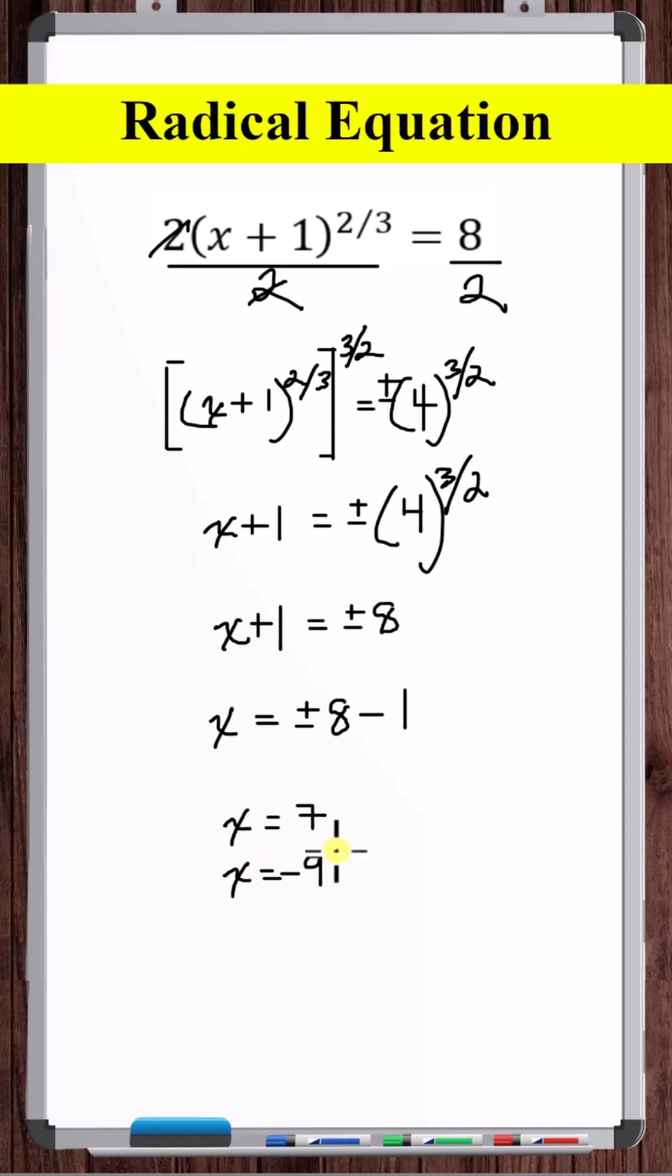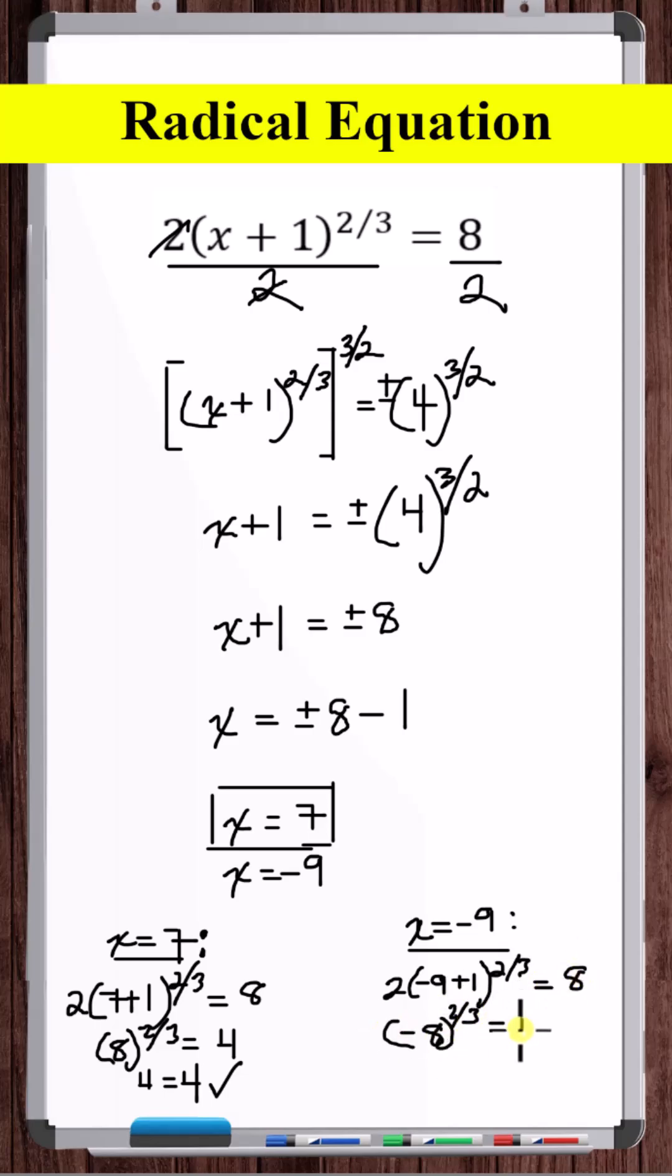We're not done, though, because with radical equations, you need to check your solutions for extraneous solutions or domain issues. So, let's plug x is equal to 7 back into the original equation. 7 is a solution. Now, let's check x is equal to minus 9. So, minus 9 is also a solution.